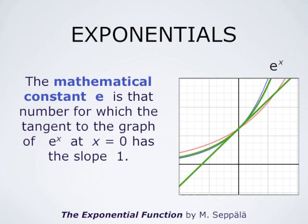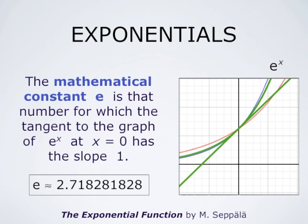We define the mathematical constant e as that number for which the tangent to the graph of the function e to the power x at x equals 0 has slope 1. This picture shows the graph of the function e to the power x — the green curve — together with the line tangent to that curve at x equals 0. E is an irrational number with the decimal approximation 2.71828...